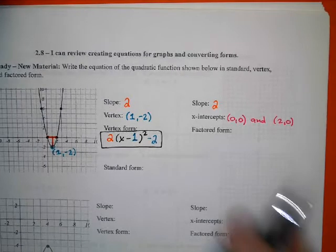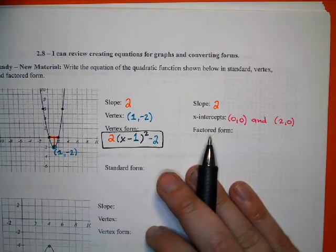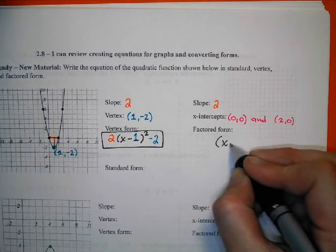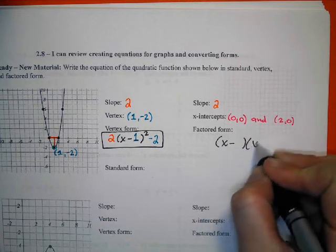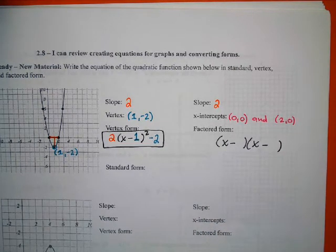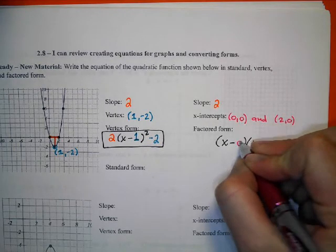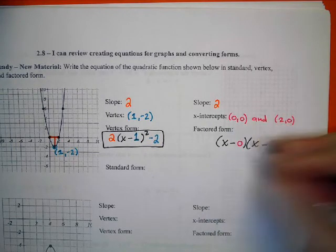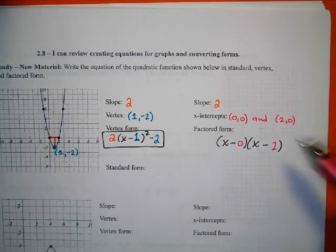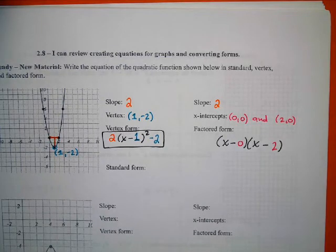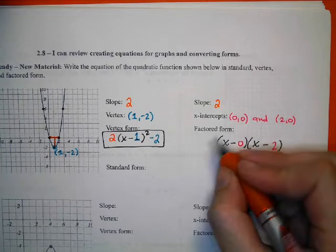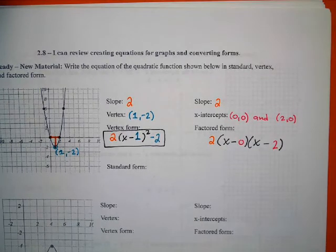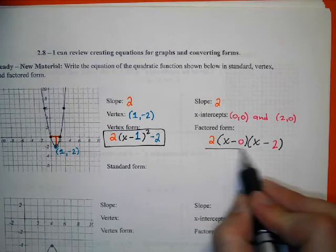Factored form. For factored form, when I write it, I'm going to have x minus, x minus, and I place in a 0 and a 2. You'll notice that the positive 2 becomes a -2. It switches sides. Then at the front, I need the slope. And that one is factored.